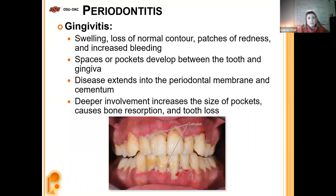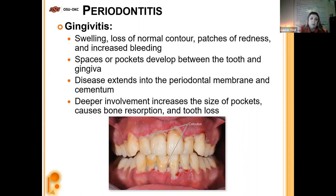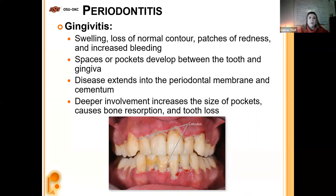Periodontitis: gingivitis refers to swelling, loss of normal color, redness, and increased bleeding of the gums. Pockets develop between the tooth and the gingiva. The disease will extend into the periodontal membrane and cementum, and deeper involvement will increase the size of those pockets and cause bone resorption. Literally as the infection spreads, you have receding of the gum line and further infection deeper within the structures holding the teeth into the bone — and the bone itself can get dissolved away.